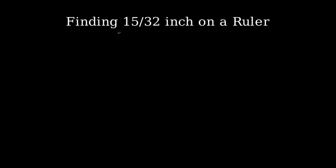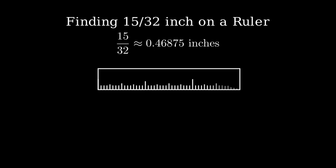Today we'll learn how to find and measure 15/32nds of an inch on a ruler or tape measure. Let's start by looking at a ruler. A standard ruler divides each inch into 32 equal parts. These smallest marks represent 1/32nd of an inch.